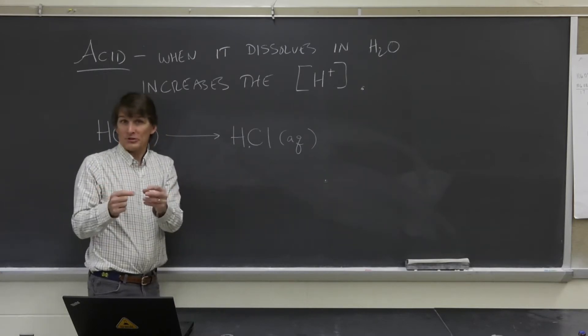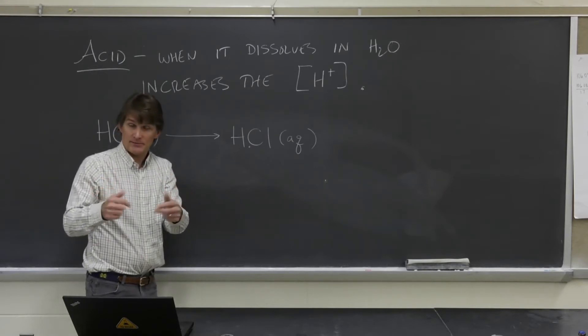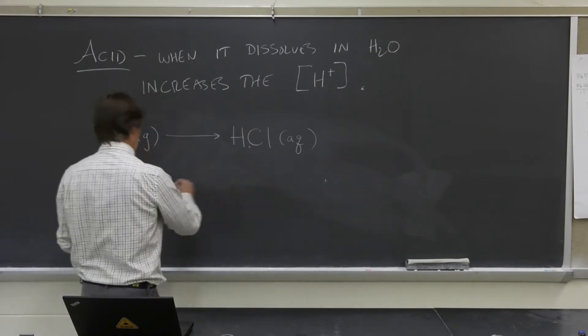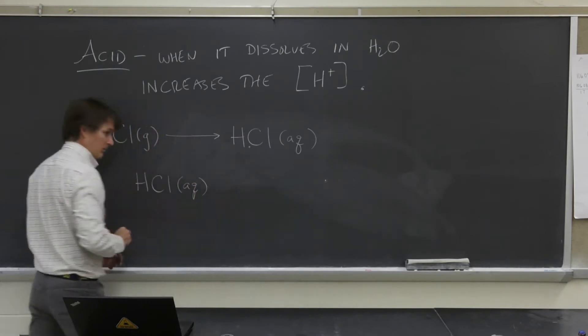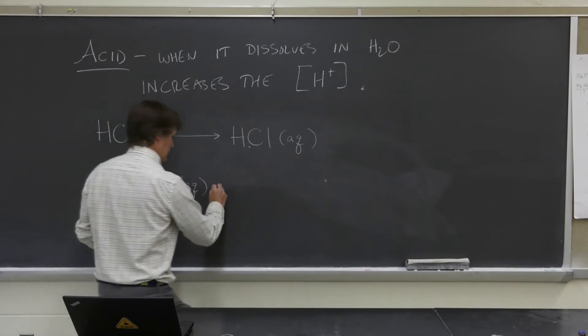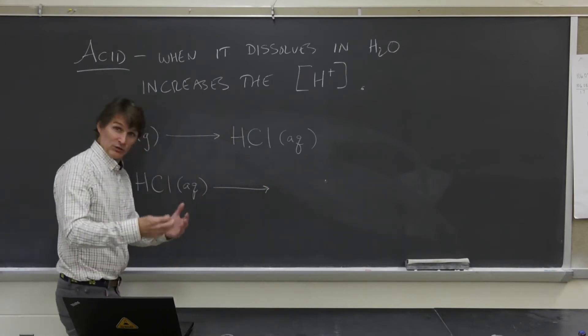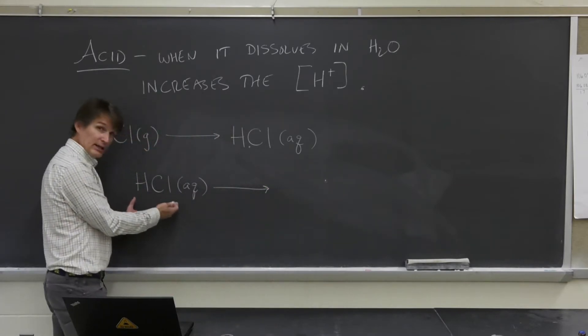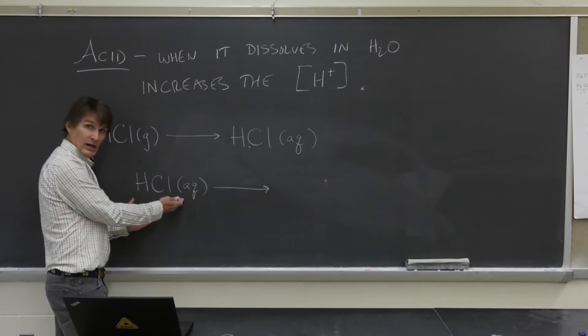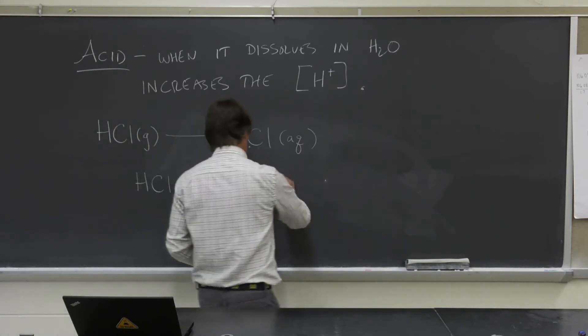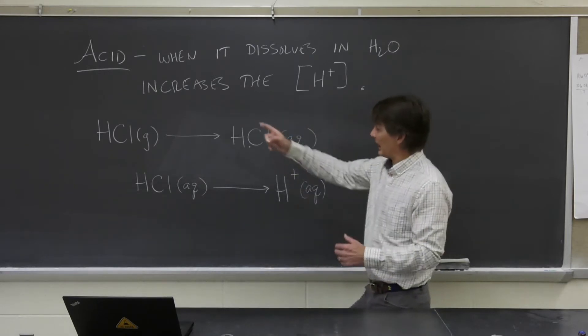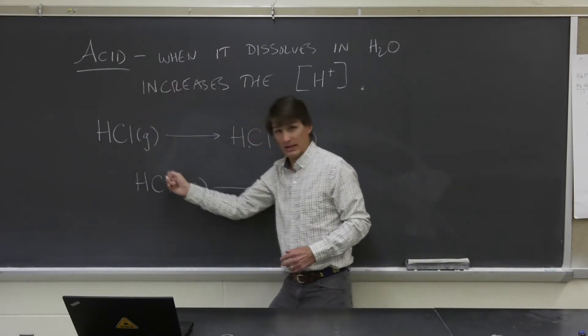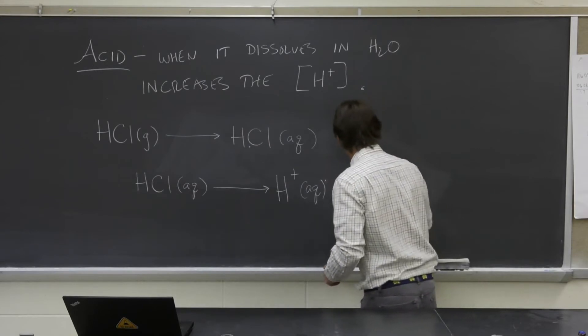We sometimes say it's constituent ions, the ions that make it up. So really what happens in solution, once that HCl molecule dissolves, it completely dissociates. You don't have any molecular dissolved HCl gas. What you get are protons, dissolved protons. There's the acid. That's what makes this an acid. And chloride ions.